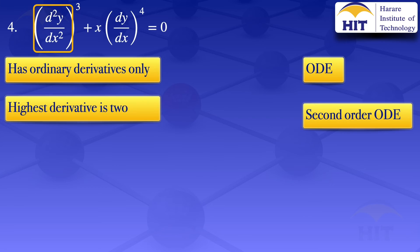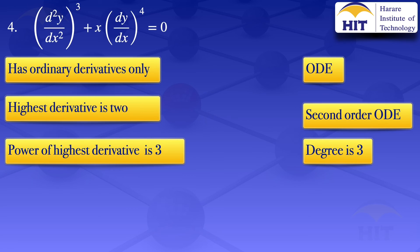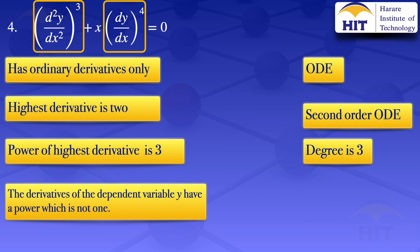Looking at the highlighted part, the highest power of the highest derivative is raised to the power of 3, so by definition the degree of that equation is 3. The derivatives of the dependent variable y are raised to the power 3 and the power 4 respectively. Since they are raised to powers which are not 1, the equation is non-linear. In summary, question number 4 is a second order ordinary differential equation of degree 3, and the equation is non-linear.